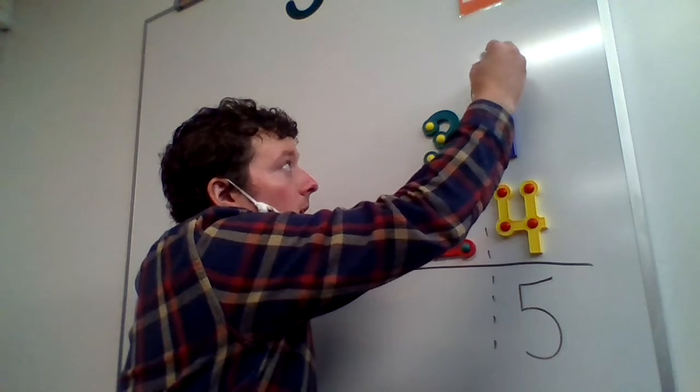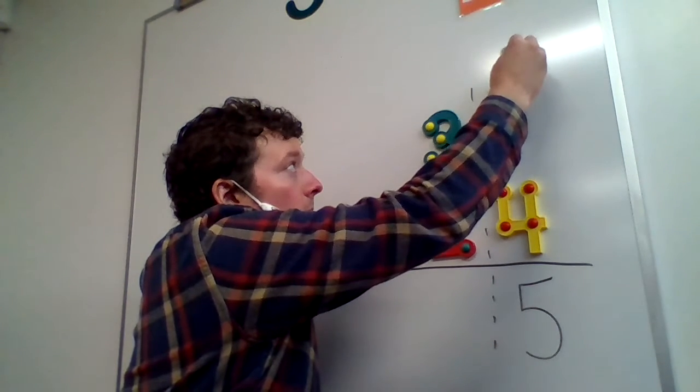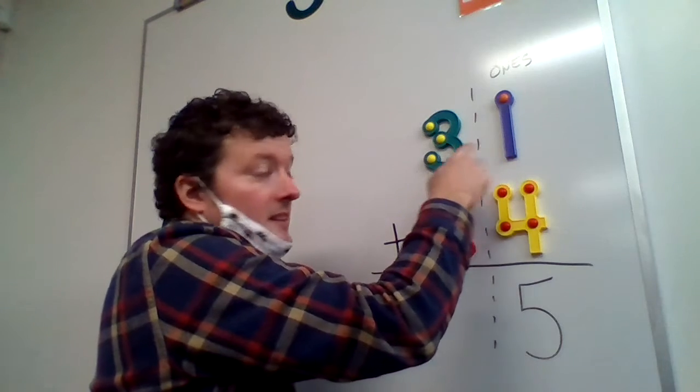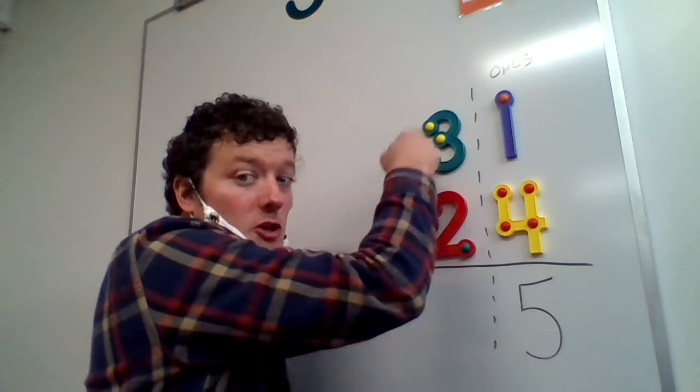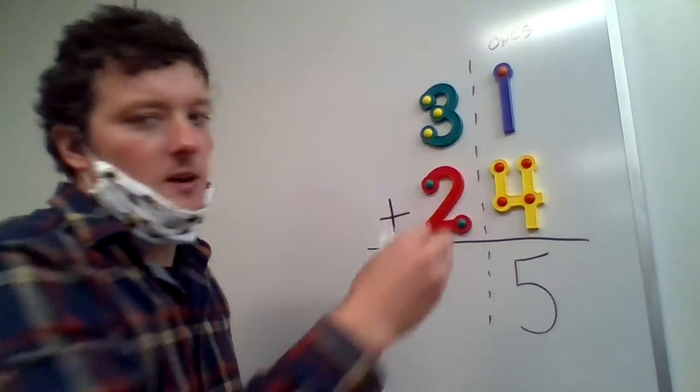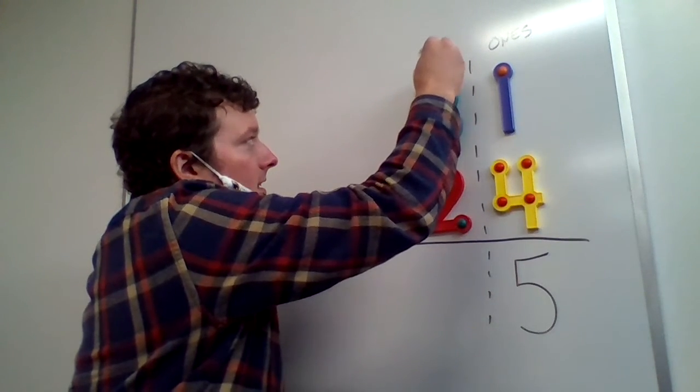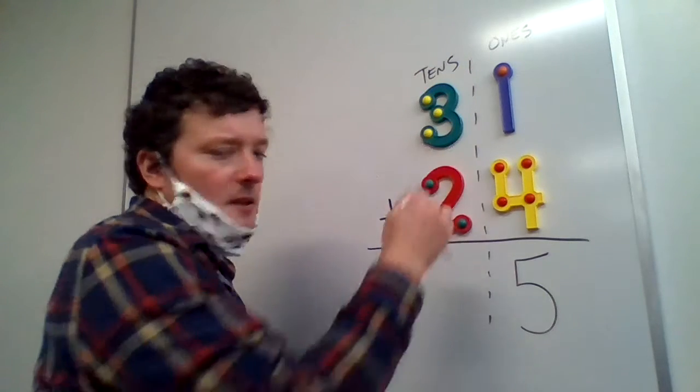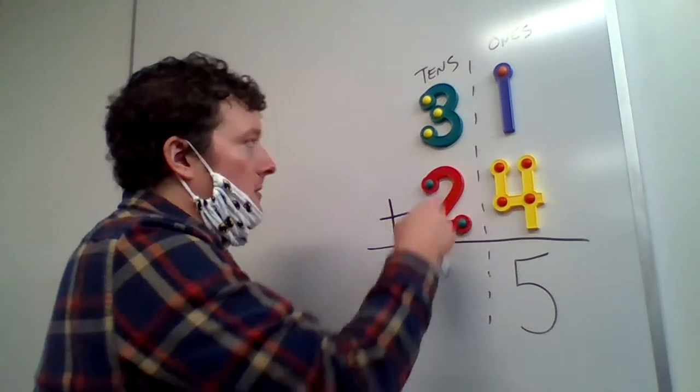And this is in the ones column. That's very important that we remember that. This is the ones. This column is the tens. And each column we add on goes up. Oh, that glare makes it a little hard to see, but it says ones. This column here is the tens and same thing. We're just going to add straight down the tens column.